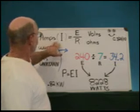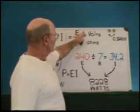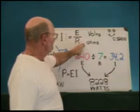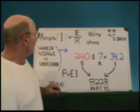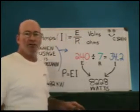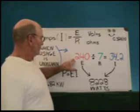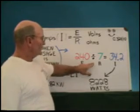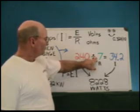But basically amps is equal to volts divided by ohms. So let's say you have a jacuzzi. I like using that as an example. 240 volts and you have 7 ohms.